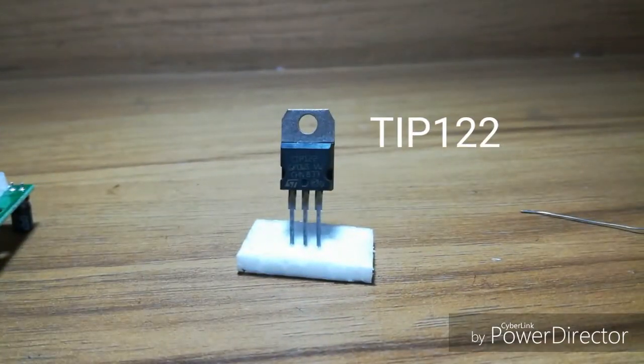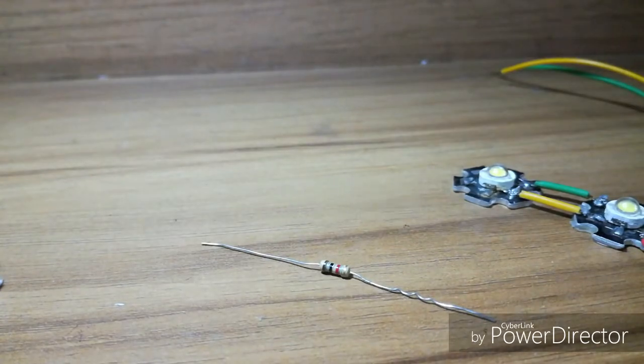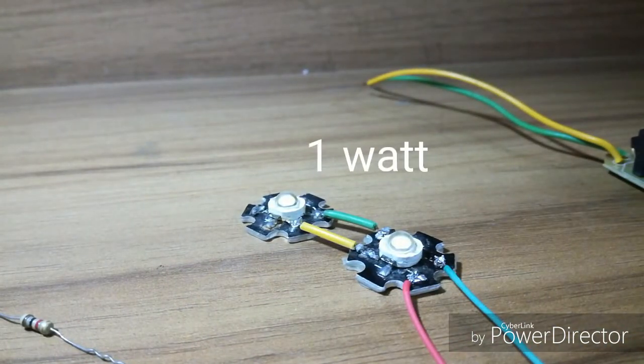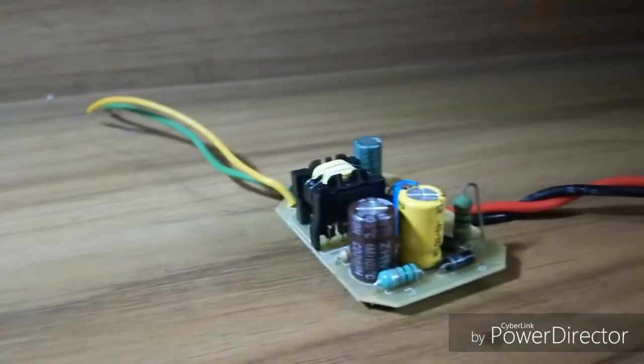A PIR sensor, a TIP122 transistor, a one kilo-ohm resistor, two one-watt LEDs, and a power supply to power the circuit.